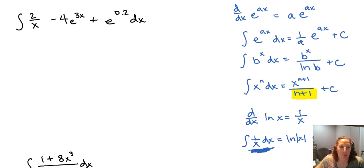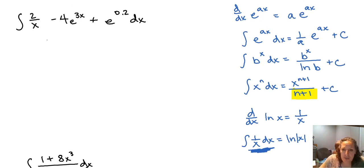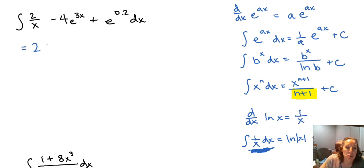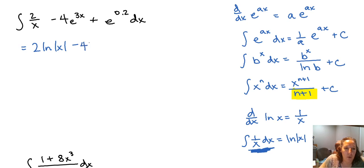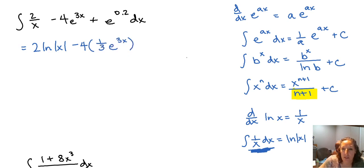Let's look at some examples. Our first one is the integral of 2 over x minus 4 times e to the 3x plus e to the 0.2 with respect to x. The first term has a coefficient of 2, so that's 2 times 1 over x, giving us 2 times the natural log of the absolute value of x. Then negative 4 e to the 3x: the antiderivative of e to the 3x is 1 over 3 times e to the 3x.